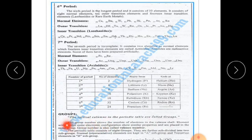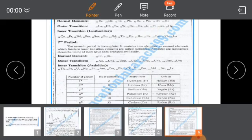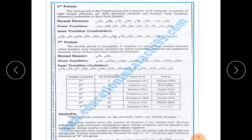Elements in the same group have similar outer electronic configuration and similar properties. The periodic table consists of 8 groups, which are further divided into 2 subgroups: normal/representative elements are in the A subgroup, and transition elements are in the B subgroup. We wind up here; we will continue in the next lecture.